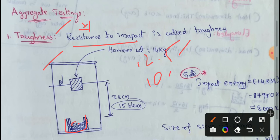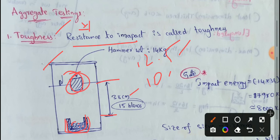We need to fill the aggregate in 3 equal layers. We need to fill every layer in this box up to 35 cm height. The weight of the hammer is 14 kg.